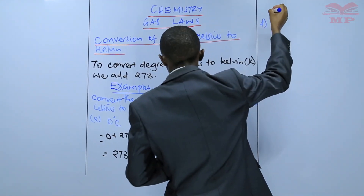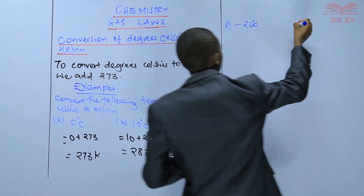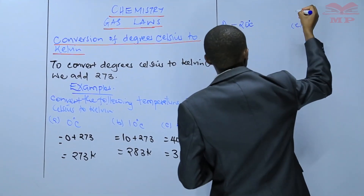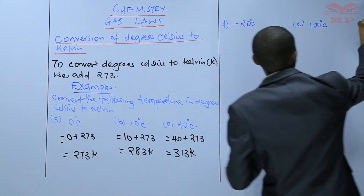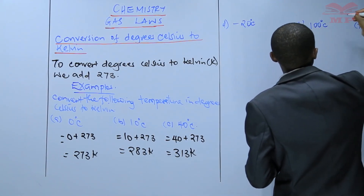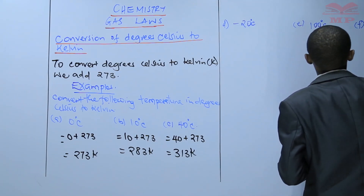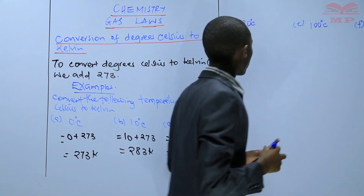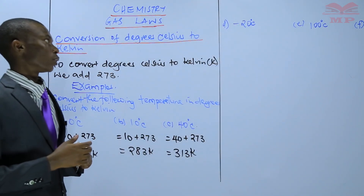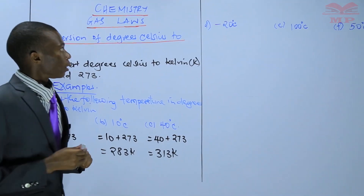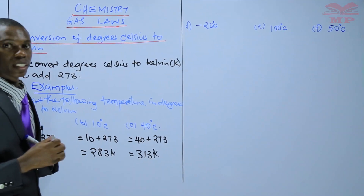You have D: negative 20 degree Celsius. E: 100 degree Celsius. F: 50 degree Celsius. Convert the following temperatures in degree Celsius to Kelvin. We have negative 20 degree Celsius — I want us to convert negative 20 degree Celsius to Kelvin.